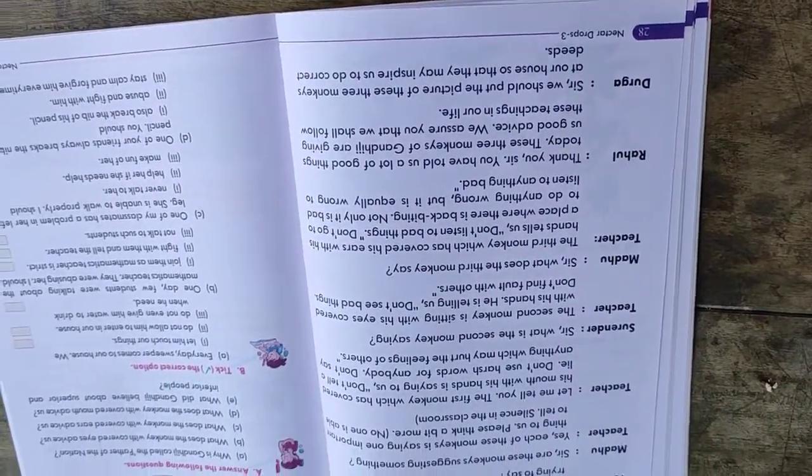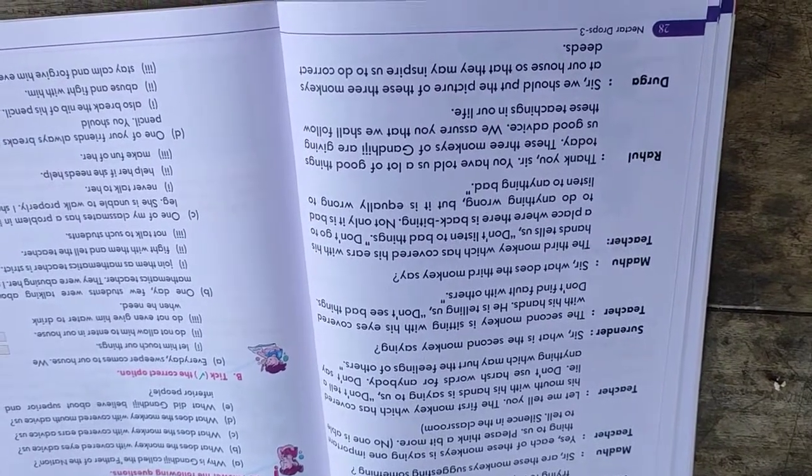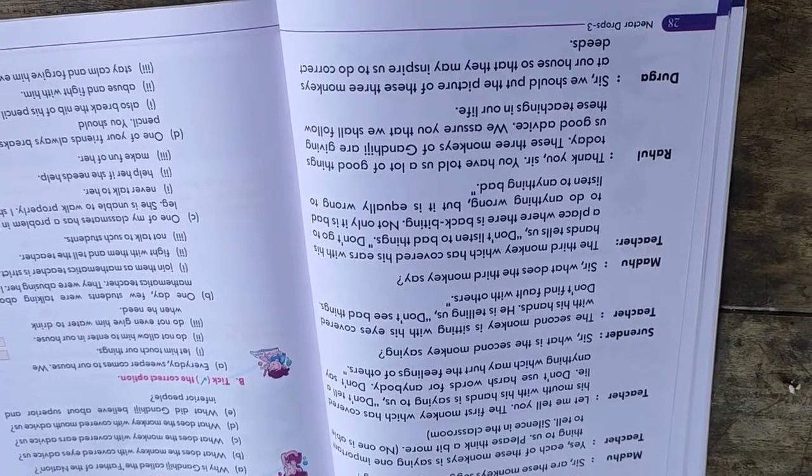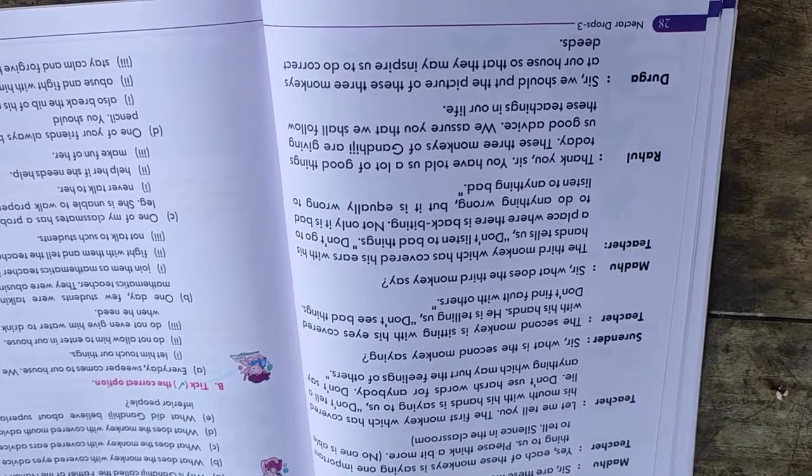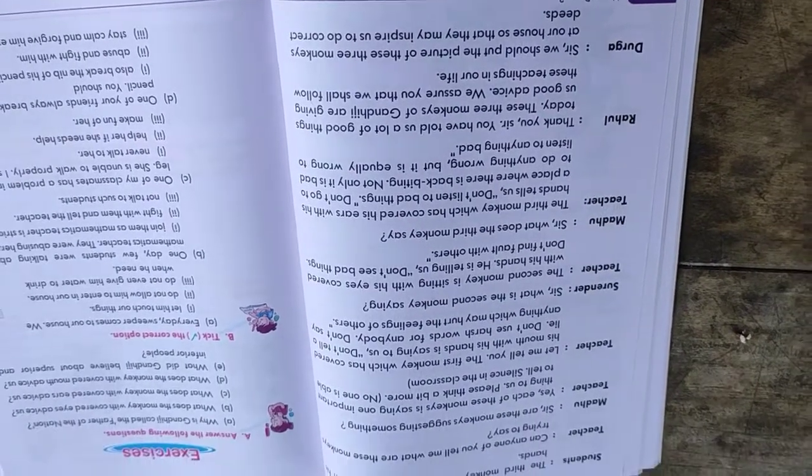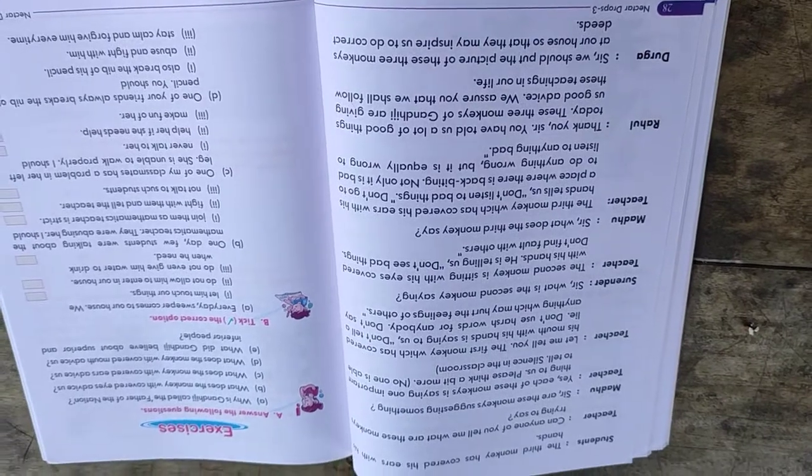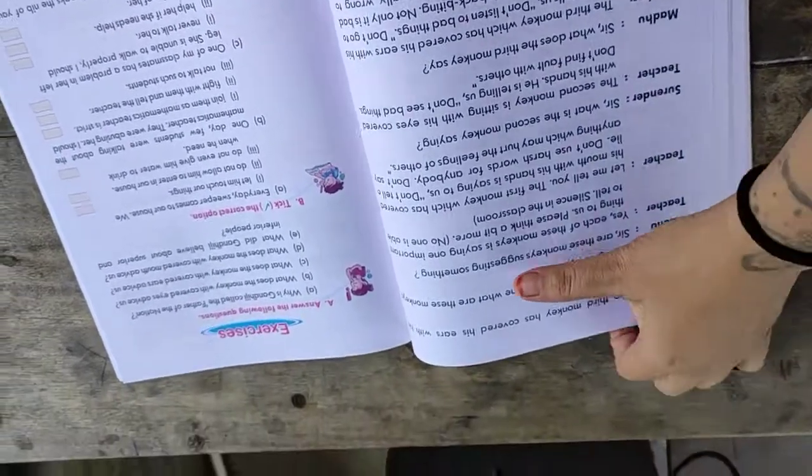So what have we learned from this chapter? We have learned that the three monkeys of Gandhiji teach us very good things. Don't hear bad, don't speak bad, and don't see bad. Because all three can harm a person, both others and yourself. Therefore, always think good of others, speak well, and do good.